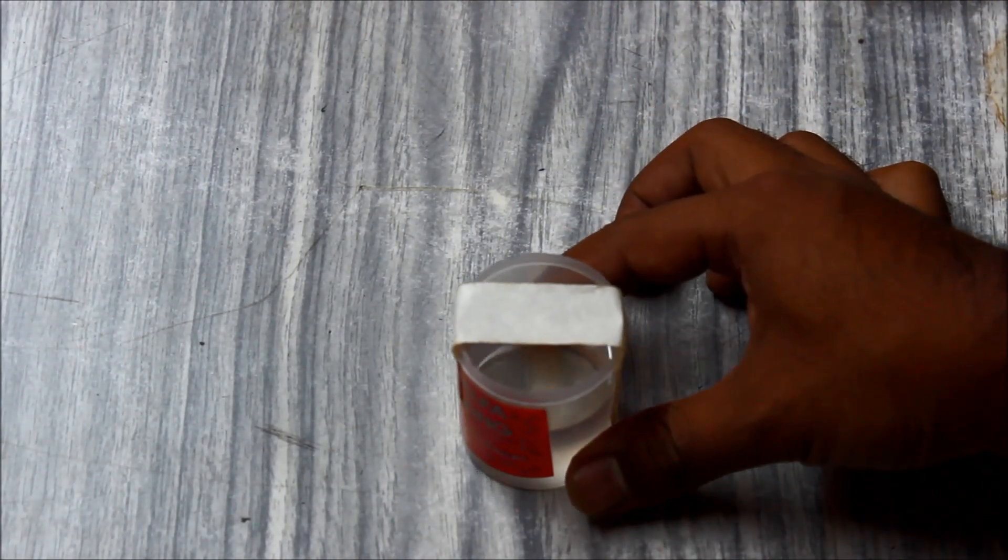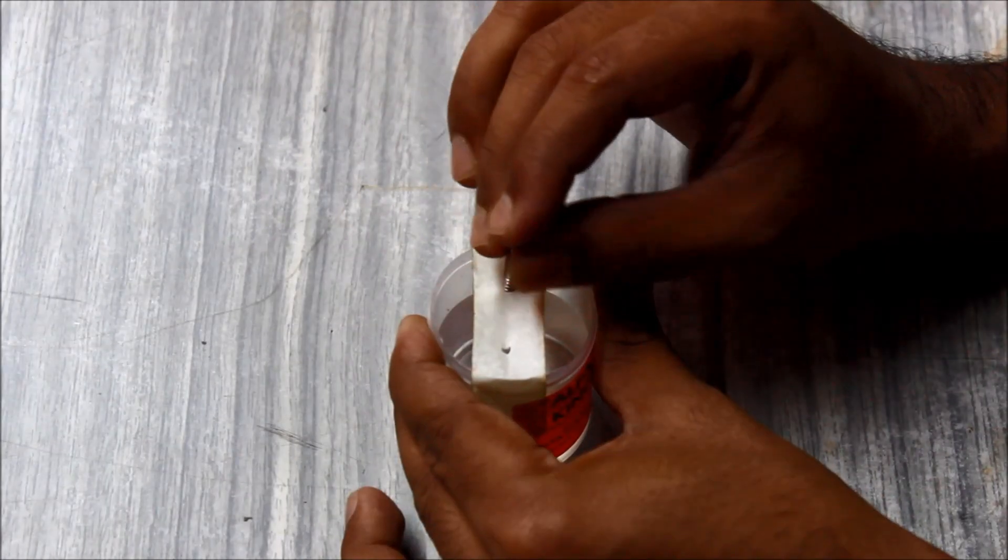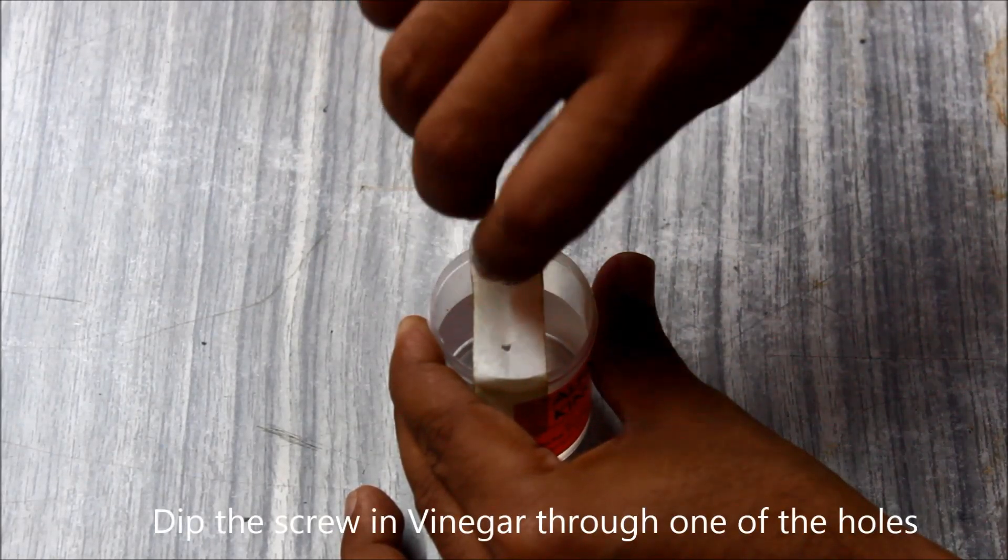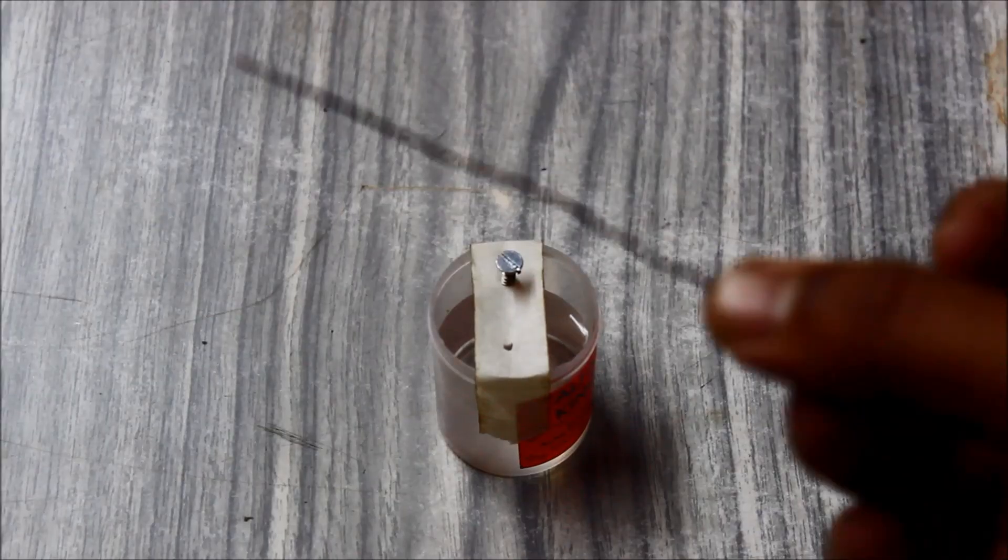We'll make two holes with a screw. Here zinc acts as an electrode—it is two different metals. So we have immersed zinc into the acetic acid.